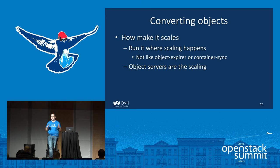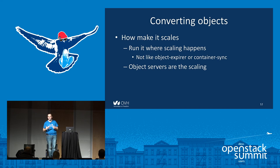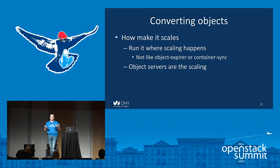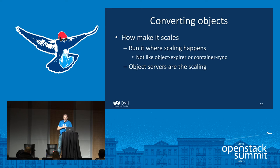Now, how do we make it scale? The idea is to run the conversion where scaling happens in Swift. Looking at the numbers on Ubik — about 20 to 30 proxies, about 50 account and container servers, and about 5,000 object servers — it's clear that scaling in Swift happens on the object servers. If you run a large-scale Swift cluster, you may have scaling issues with object expiry or container sync. The community is working on this, but the point is: scaling is in the object server, so this is where we run the process that converts objects from replica to erasure coding.